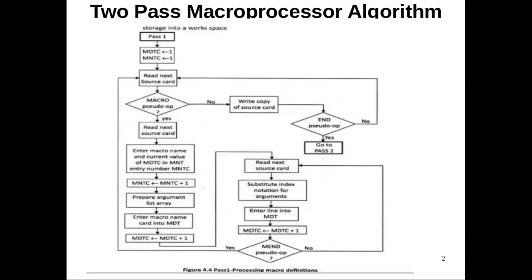Before entering into the algorithm, let me give an overview of the first three steps. The first step is specifying the problem. That means if we are implementing a macro processor, we have to know what the basic functions to be performed by a macro processor are. Stating these functions is what we call the 'specifying the problem' step in the implementation.